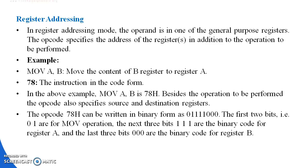The opcode 78H can be represented in binary form as 01111000. The first two bits represent the MOV operation, the next three bits — 111 — represent register A, and the last three bits — 000 — represent register B.